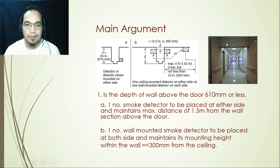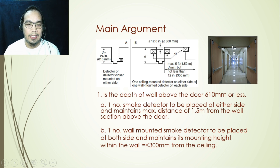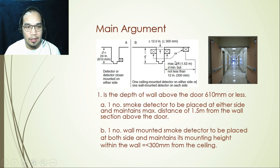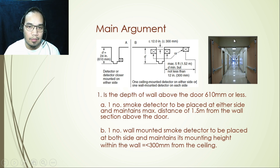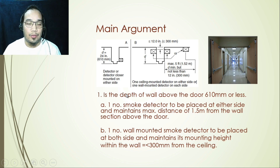The first case is when the depth of the wall above the door equals 610 mm or less. In that case, we only need to provide one smoke detector, placed at either side of the door, maintaining a maximum distance of 1.5 meters from the wall above the door. There is also an option to provide one wall-mounted detector on the other side, just above the door. However, option A — one ceiling detector — is preferable as it reduces cost.